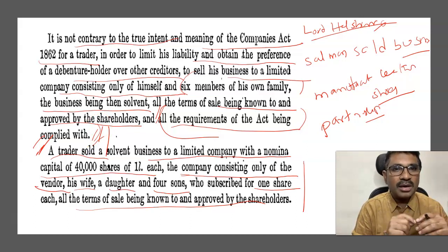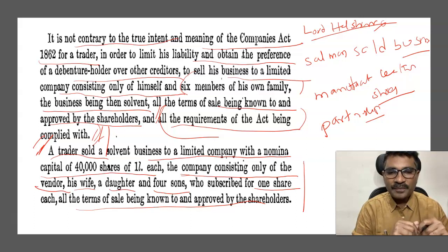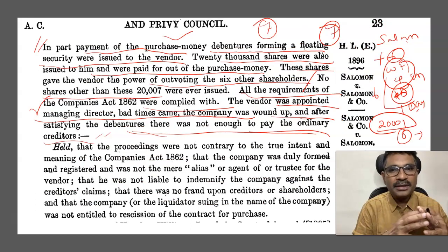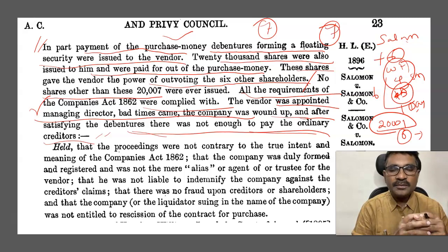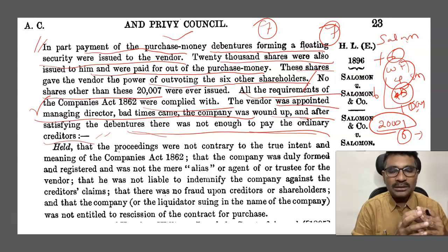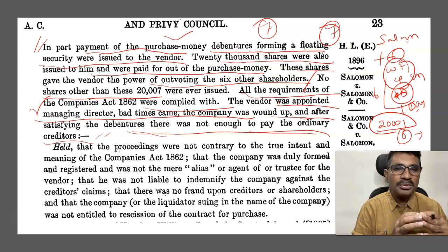The point to remember is that, irrespective of the factual situation, the requirements of the Companies Act were fulfilled. That means a company was incorporated as per the provisions of company law — that is, the 1862 Companies Act — with seven members incorporated into the company. The dispute arose later because the good business became a bad business, the company had to close, and there was a dispute as to whether this company was created only to avoid certain obligations, or whether it was a real company.